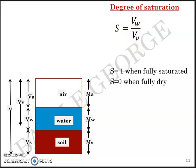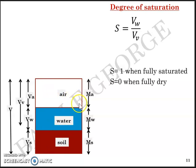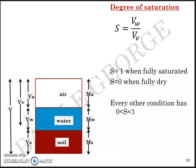S equals 0 when the soil is completely dry — when there is no water present, Vw equals 0, and Va equals Vv. In every other condition, the value of S will be somewhere between 0 and 1, or equivalently between 0% and 100%.